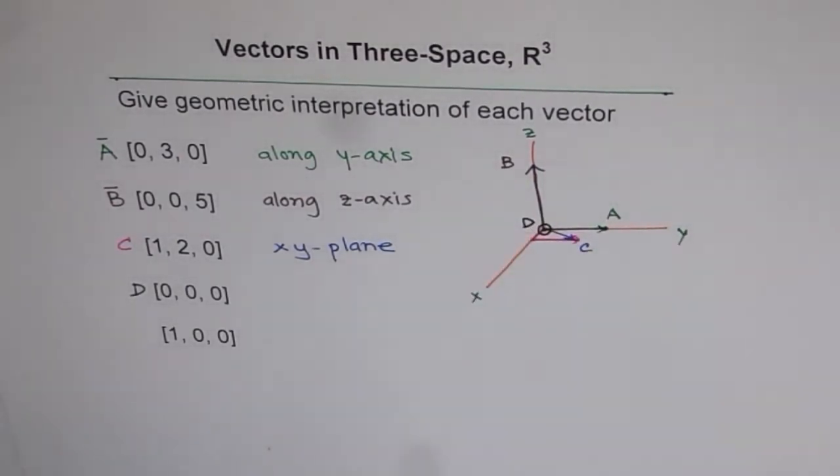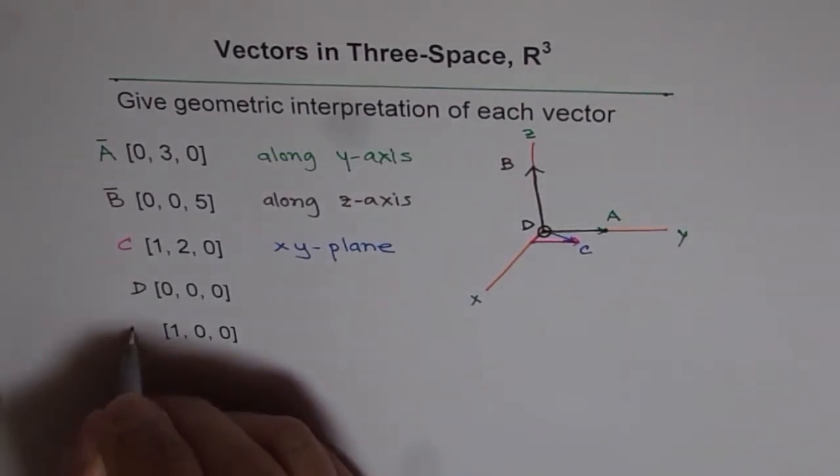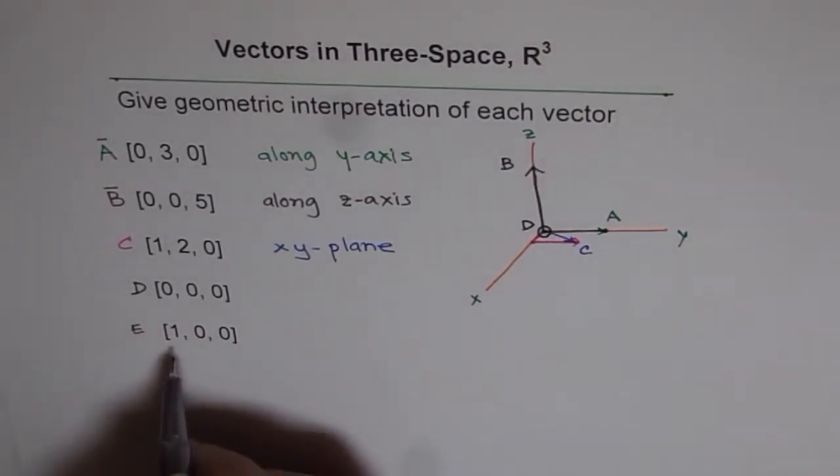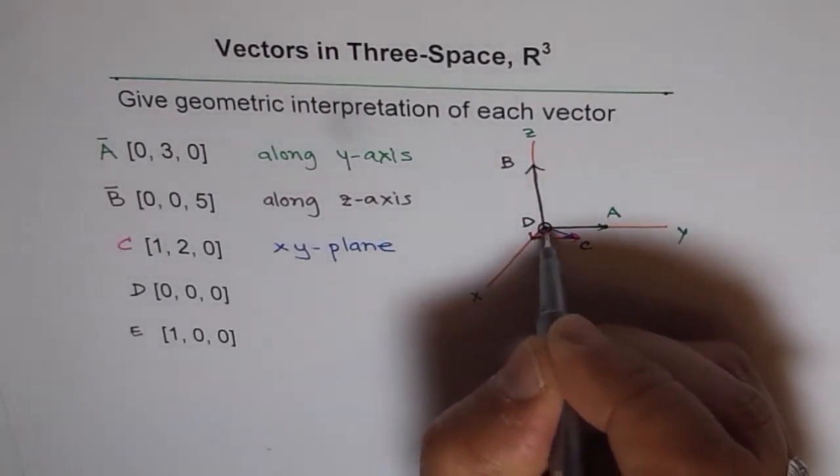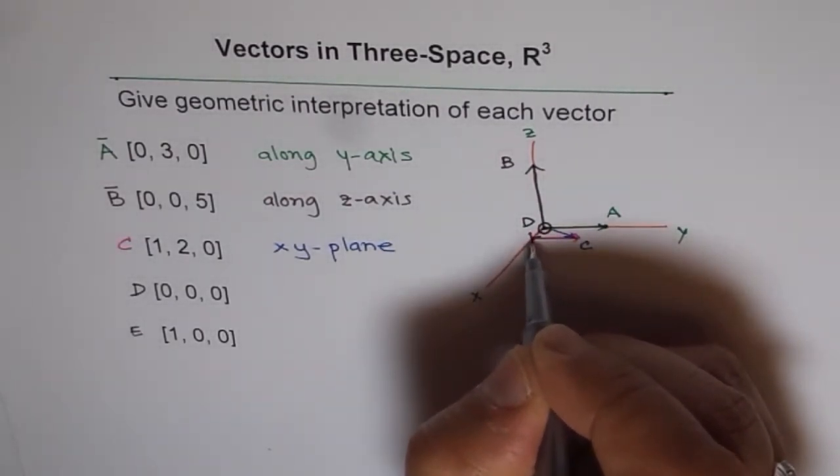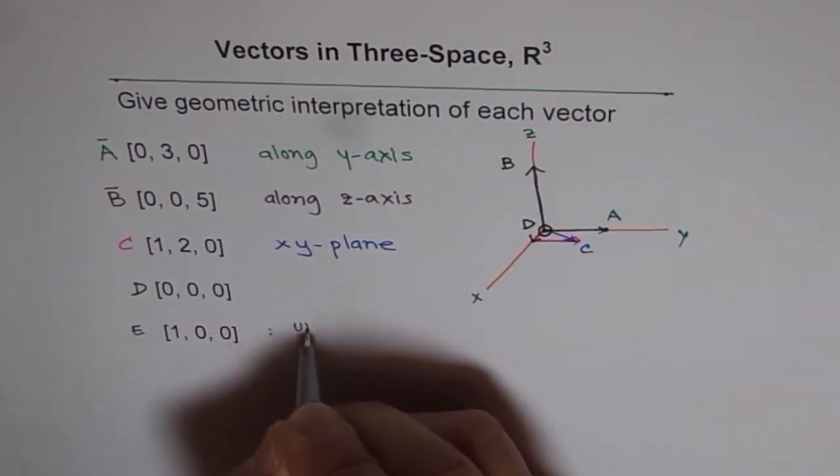Now let's look into the next one, vector E. Vector E is given as (1, 0, 0). So (1, 0, 0) will be a vector one unit along the x-axis. We can say this is a unit vector along the x-axis.